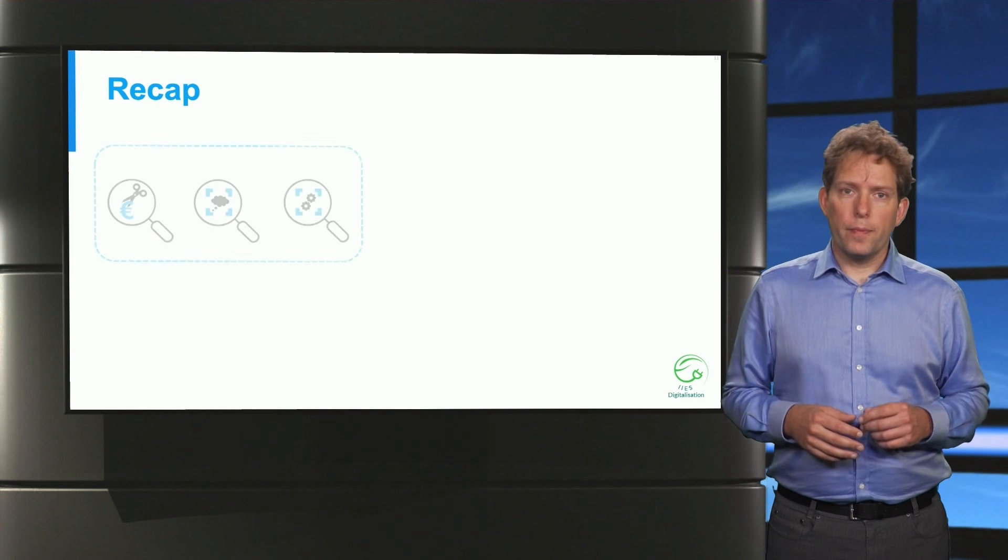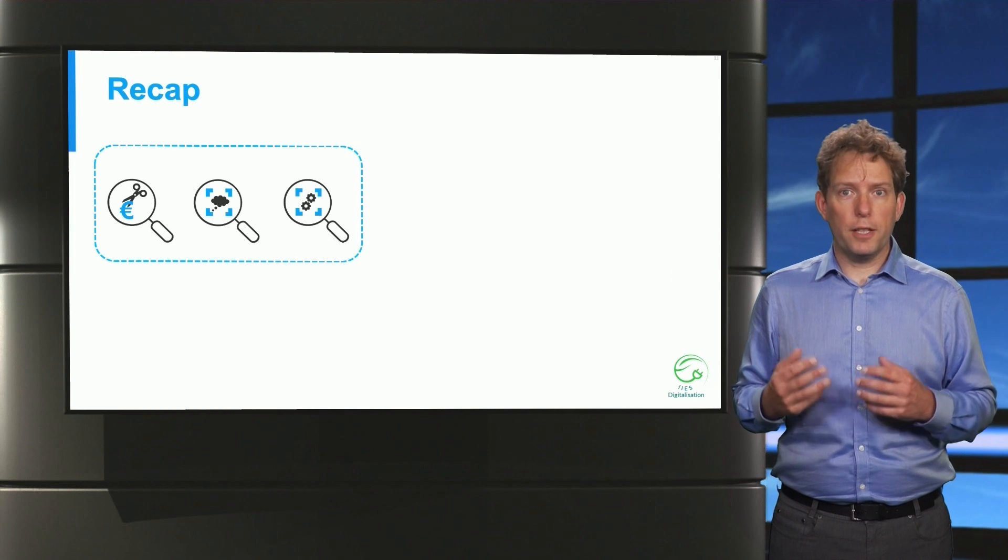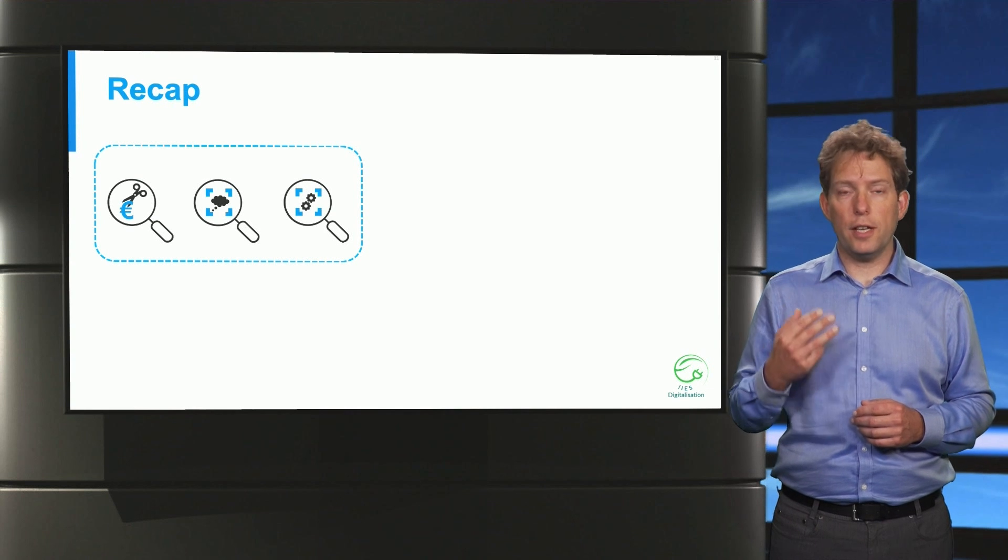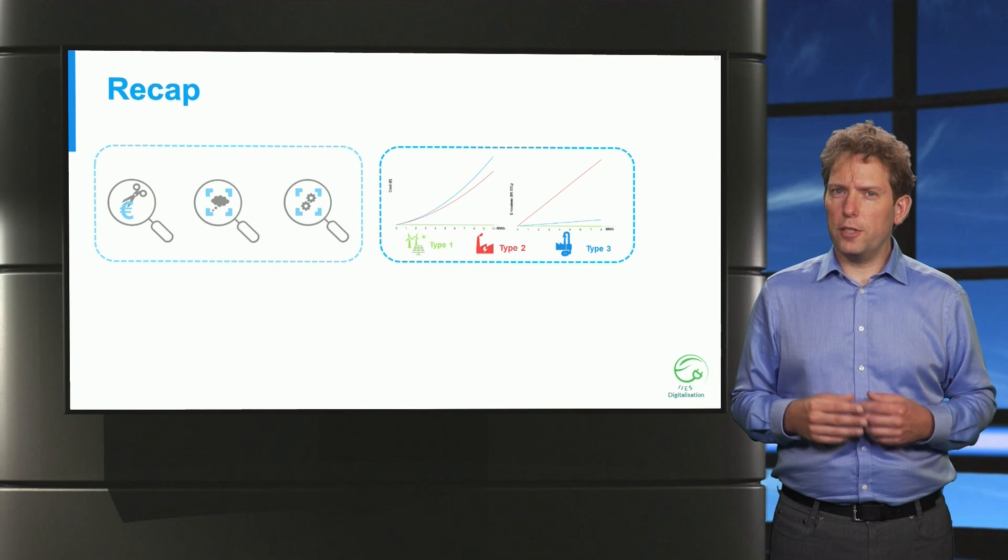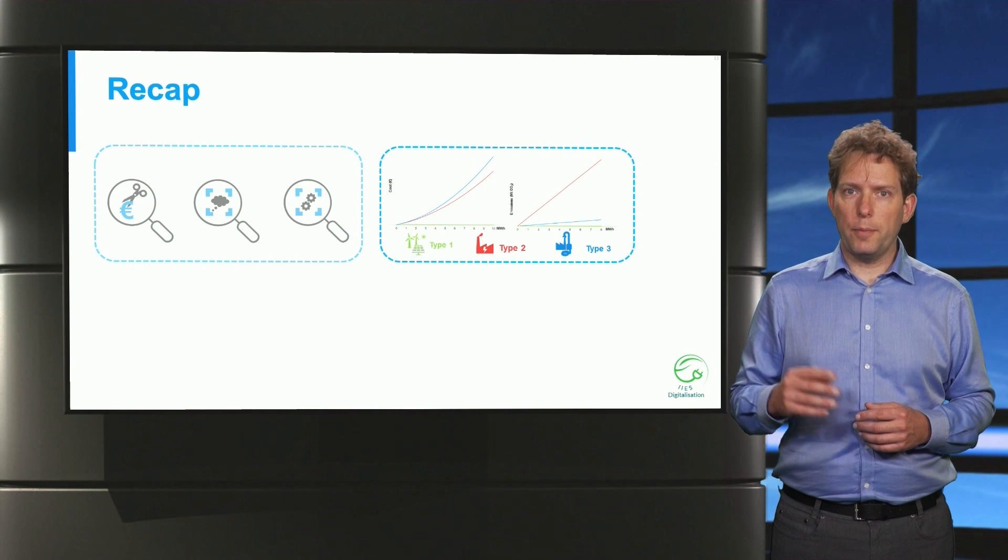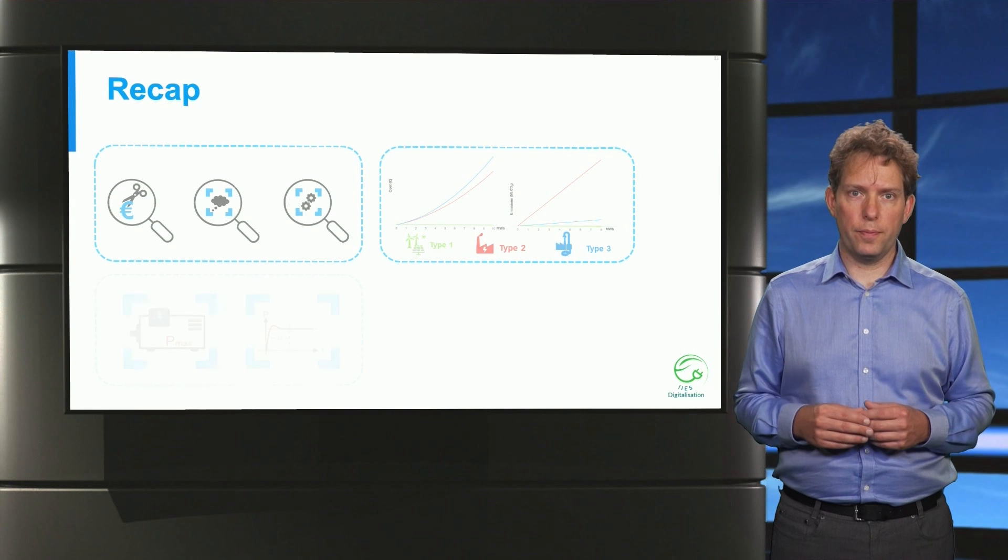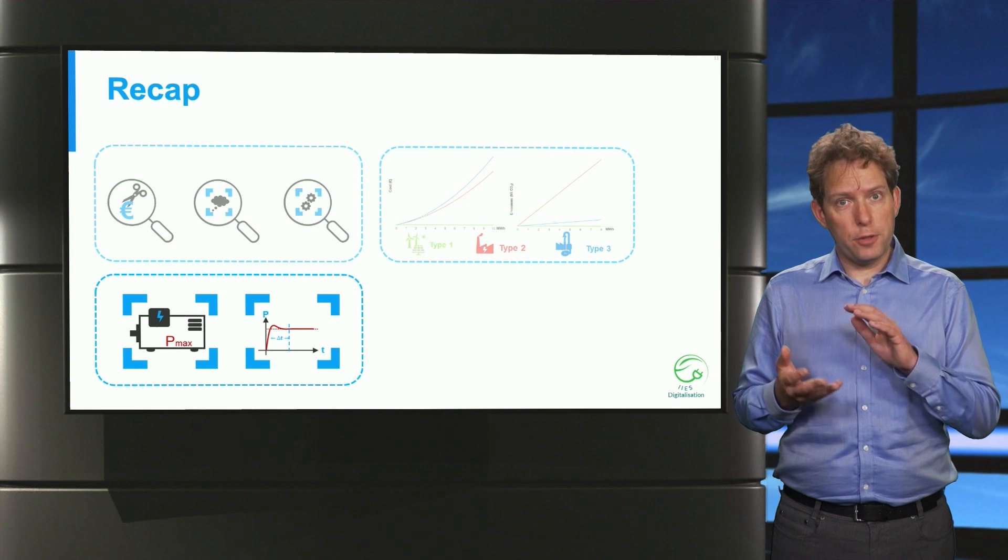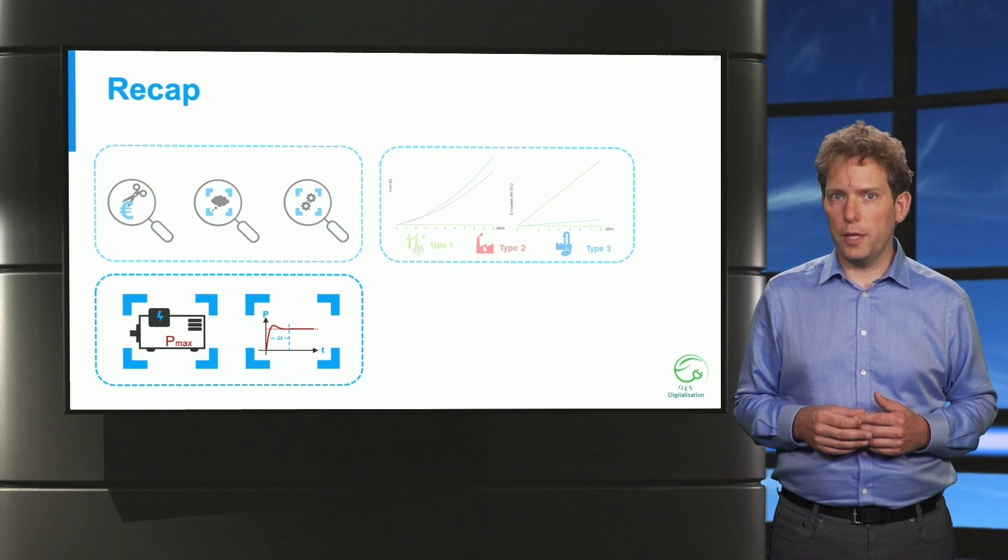So to summarize, I have introduced the three elements involved in economic dispatch decisions: generating costs, emissions and technical constraints. I have also shown you how to construct simple models for generating costs and emission costs. And when doing this, we only consider the variable cost of generation.